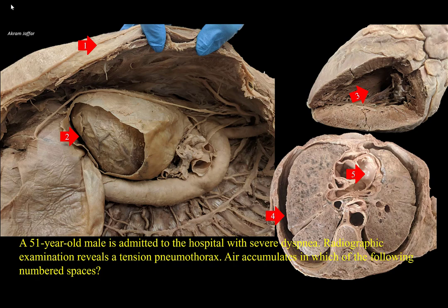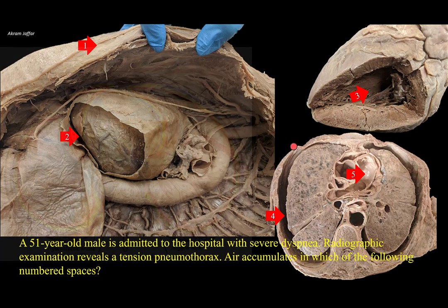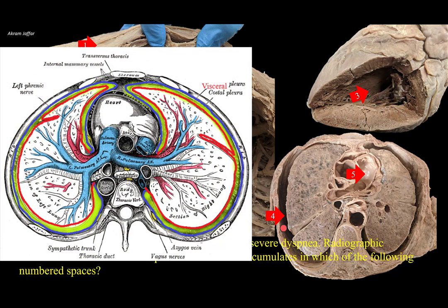Now let's find where the pleural cavity is located. There are two pleural cavities, one on either side of the mediastinum. The cavity is a potential space located between the parietal pleura that lines the thoracic wall and the visceral pleura that covers the lung surface. The space looks bigger in this horizontal section of the thorax because of tissue shrinkage during plastination to preserve the specimen. Otherwise, the pleural cavity contains only a thin film of serous fluid called pleural fluid between the visceral and parietal layers.